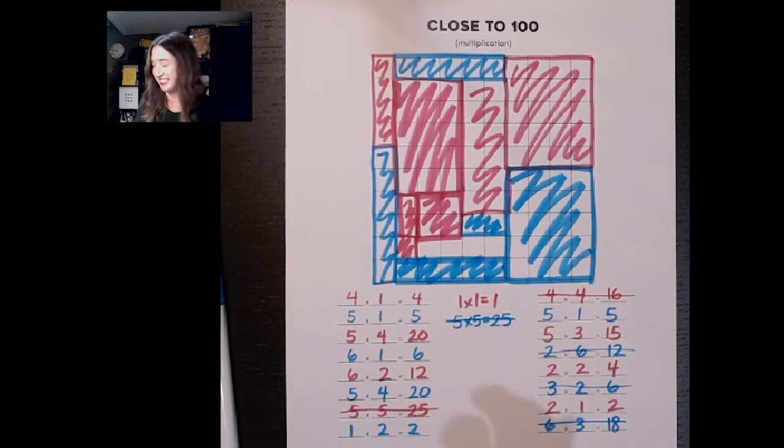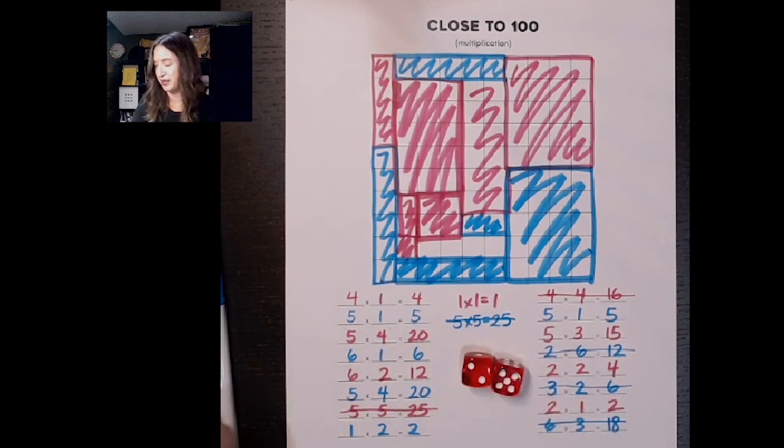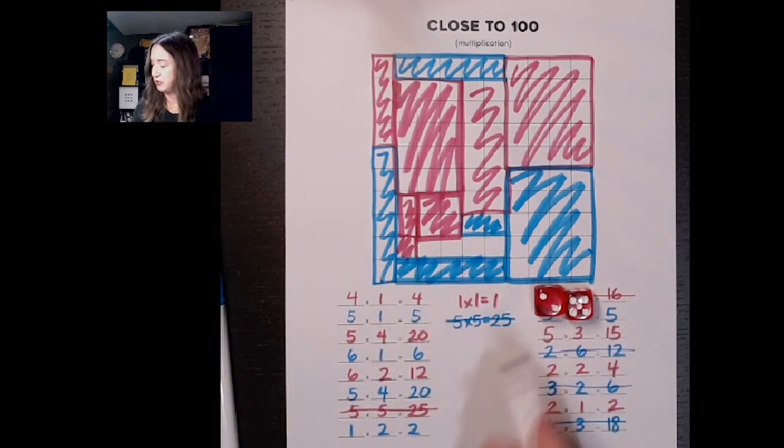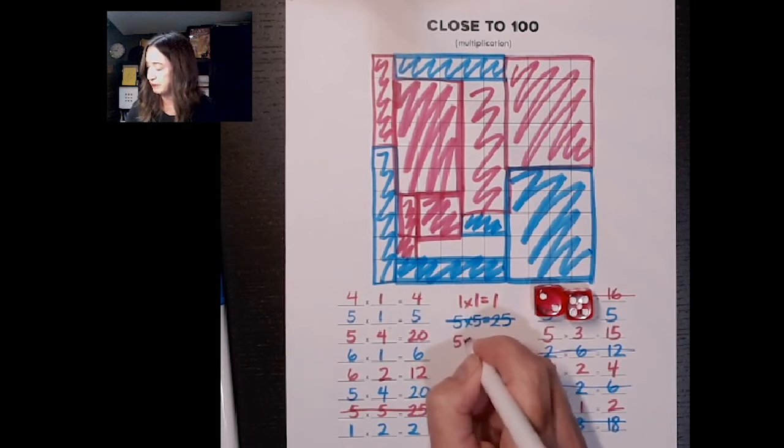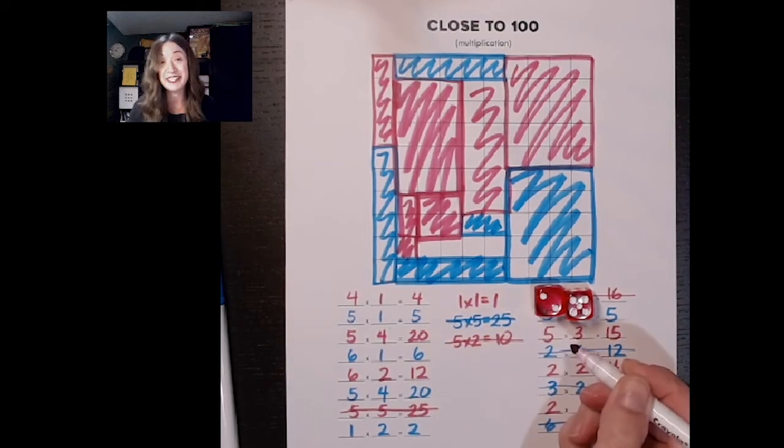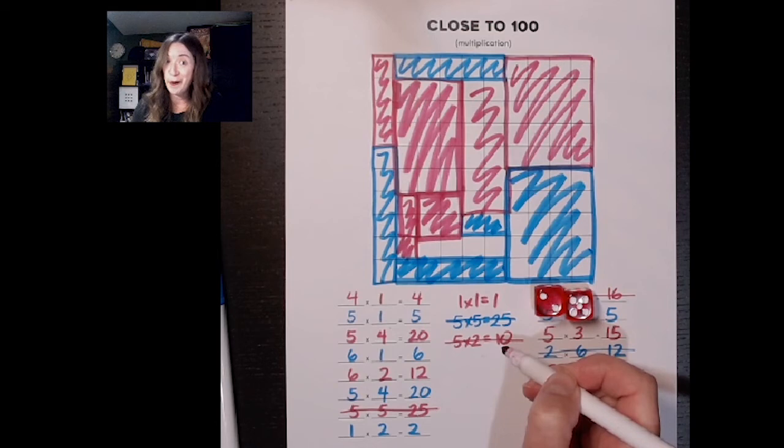Now it's pink's turn again and it's 5 times 2 and there is no place left to do 5 times 2. So pink will write this down 5 times 2 is 10 and make the line. And friends, when both partners get skunked in a row, that means the game is over.